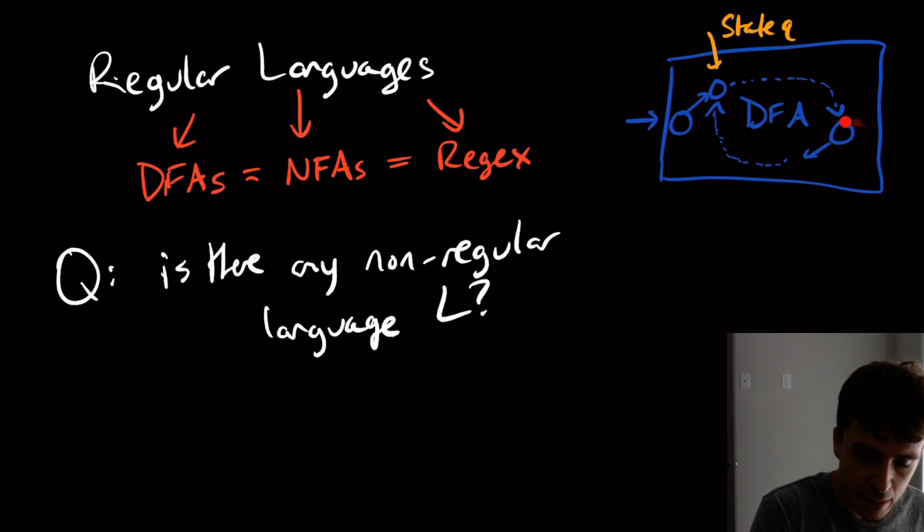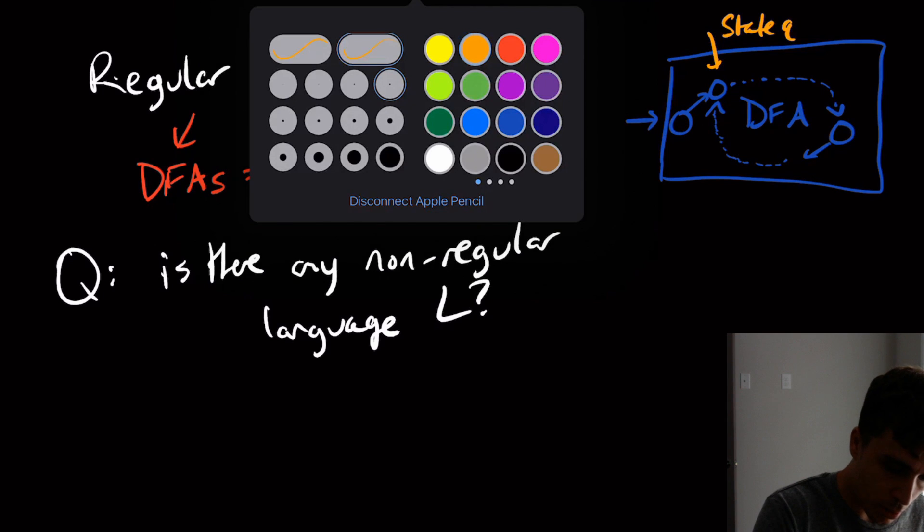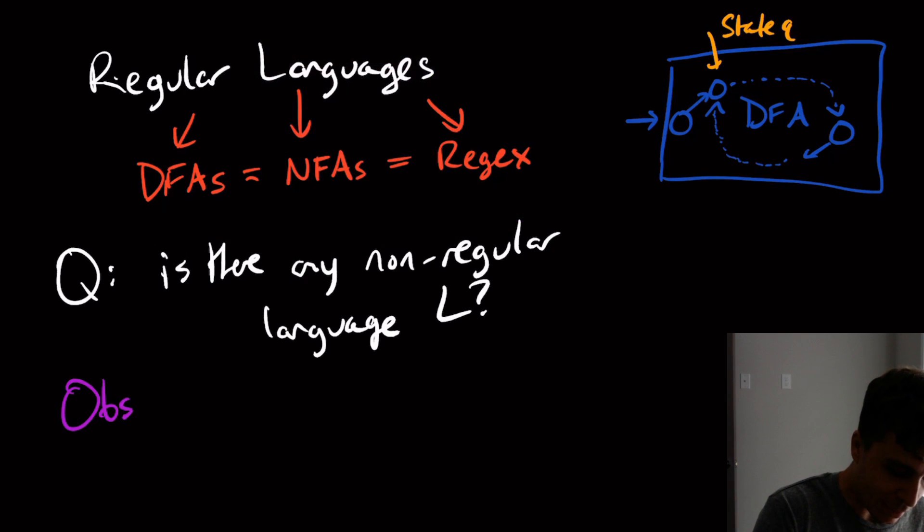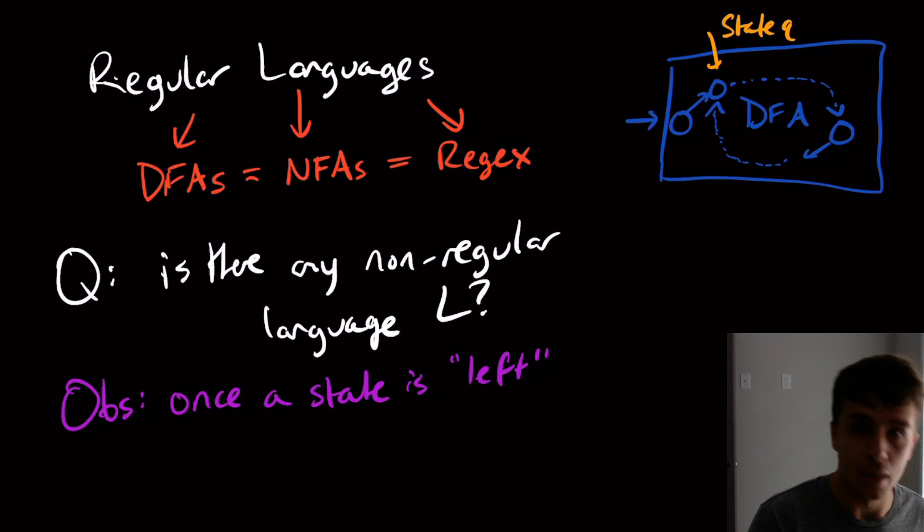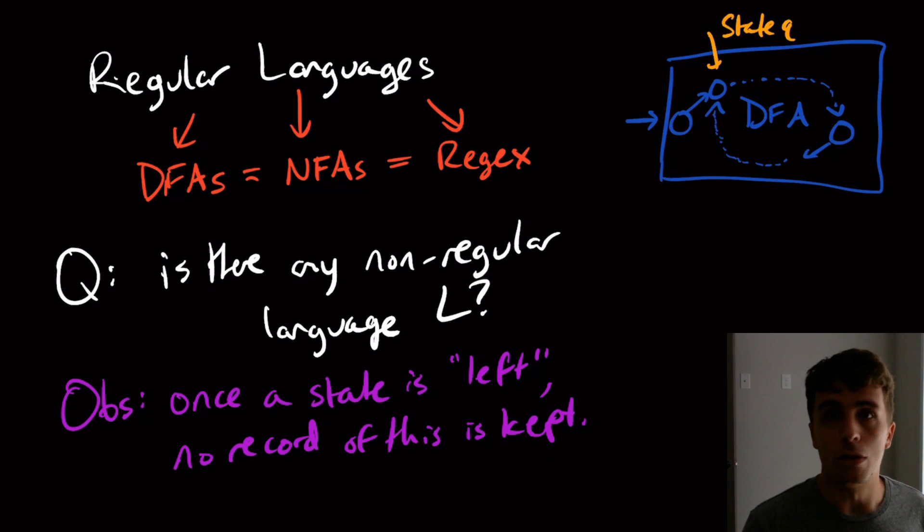And in fact, this state right here, we lost all information that we've ever visited that state. So one observation that we can see is that once a state is left, and by that I mean you visit it and then you exit it, you go to a different state. No record of this is kept.